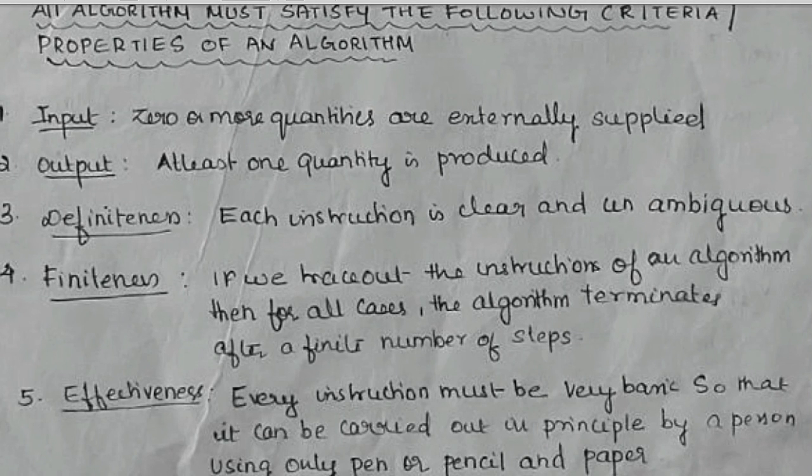What are the properties of an algorithm or what are the characteristics of an algorithm? The characteristics of an algorithm should be: it should have an input or it may not have an input. It should have an output and definiteness should be there. Finiteness should be there. And it should be very much effective also.